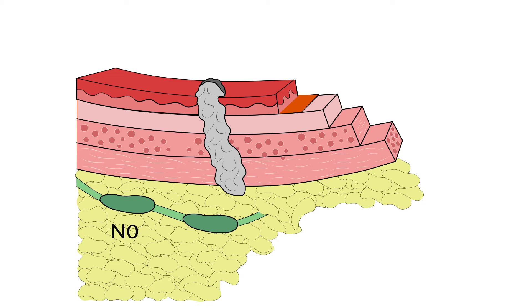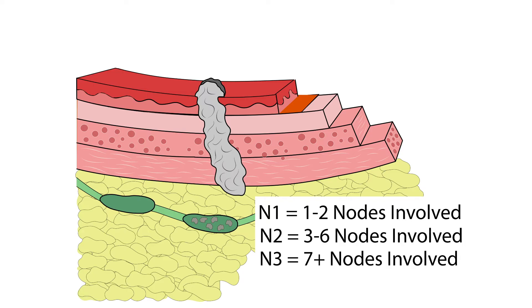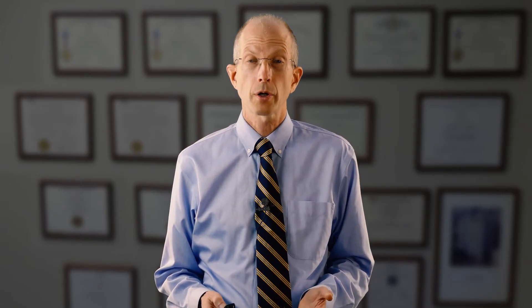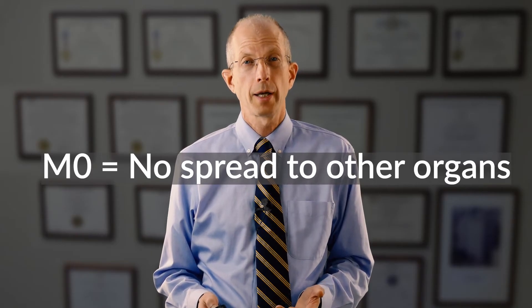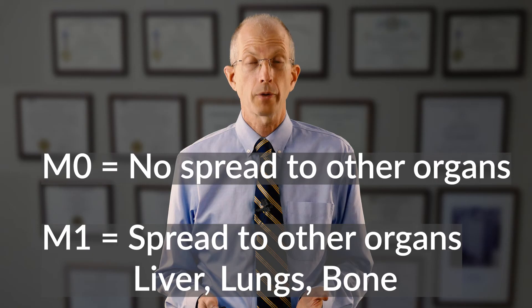There are of course exceptions, but this is a general guideline. The N classification refers to the lymph nodes. An N0 tumor is one in which there is no spread to the lymph nodes. N1 is when one or two lymph nodes are involved. N2 is when there are three to six lymph nodes involved. And N3 is when seven or more lymph nodes are involved. The M classification refers to metastasis — a spread of the cancer to other organs such as the lungs, liver, or bone. M0 is when there are no signs of spread to any other organs, and M1 is when the cancer has spread to other organs.